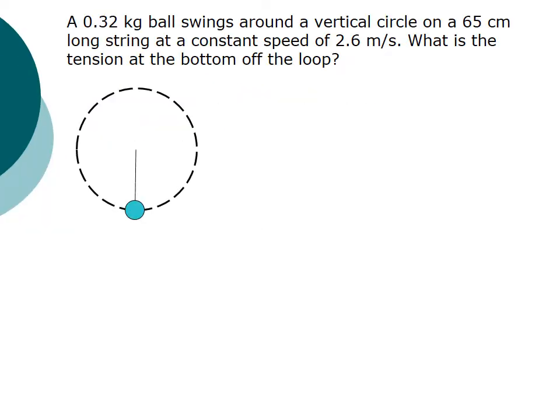All right, so in this case, we have a ball that's being swung around in a vertical circle. In other words, this is down, this is up. This isn't on a horizontal surface of any kind, so it's actually going down and then back up. The circle, the length of the string is 65 centimeters. The speed of the ball is, and this is important, a constant speed of 2.6 m/s. So later on, we're going to refer to that. It's always a constant speed, even though it's going up and down.